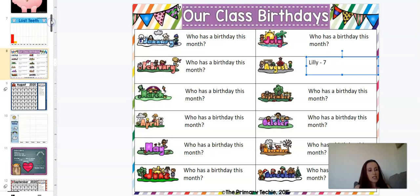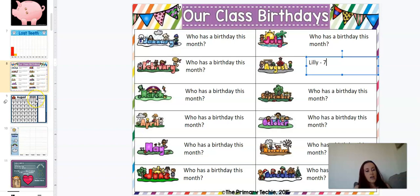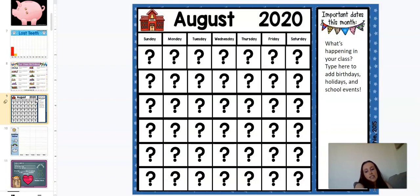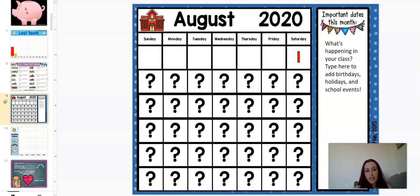I'm going to scroll down a little bit over here. So now we're on to August. The top of their calendars, they're going to write August and the year. And then you are just going to delete these question marks to find the numbers. And they're going to follow along so that they're making their own calendar. And of course, August 1st is all the way over here on a Saturday.